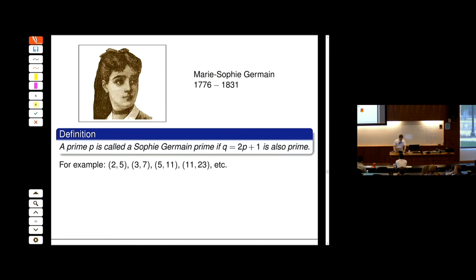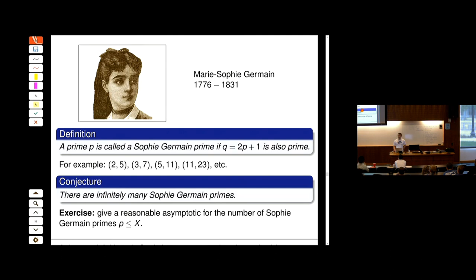Last but not least: Sophie Germain primes, also related to Fermat's Last Theorem. Sophie Germain was looking at primes p such that both p and 2p+1 are prime. Examples: 2 and 5, 3 and 7, 5 and 11, 11 and 23, and so on. The conjecture is that there are infinitely many Sophie Germain primes. Nowadays they are also interesting from a computational/encryption standpoint — they're called safe primes.